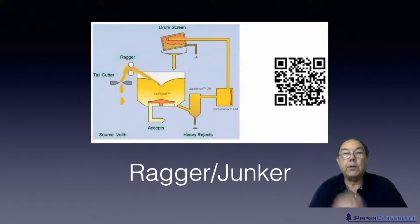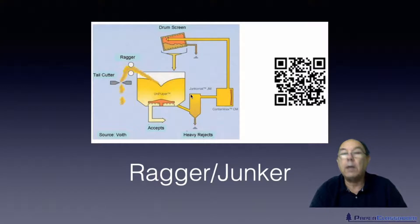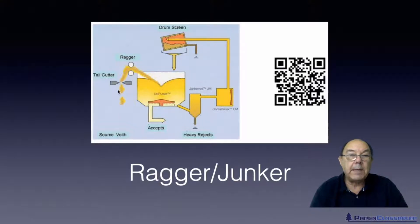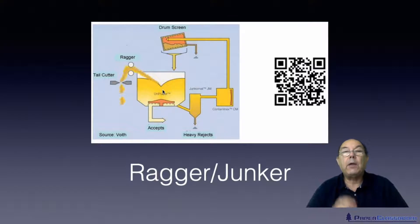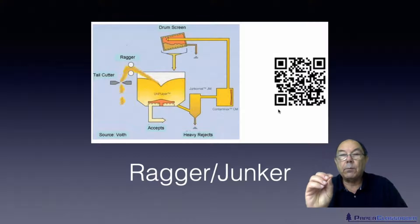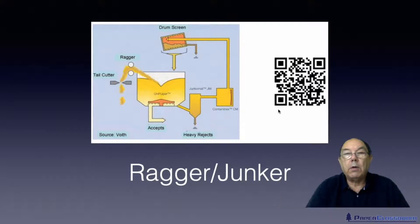That would be the ragger junker system. It's called the ragger junker because we have what we call the junker - this will collect small heavy metal objects and dense objects - and this here is what we call the ragger, it's a rope that's thrown in. The way this works is that you throw into this low-consistency hydropulper the bale of waste including the wires. There's a QR code here - if you freeze this video and scan it with your smartphone it will take you to another video on my website where you can actually see this ragger junker in action.